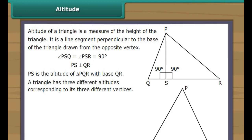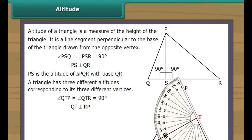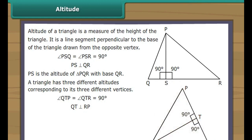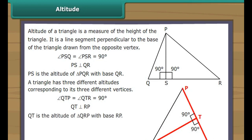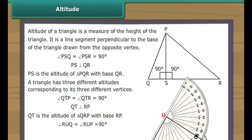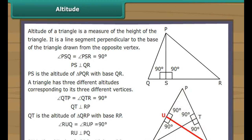Let us now look at the remaining altitudes. We draw a line segment from Q perpendicular to RP at point T. It intersects RP at right angles. Therefore QT is the altitude of triangle QRP with base RP. We draw another line segment from R perpendicular to PQ at point U. It intersects PQ at right angles. Therefore RU is the altitude of triangle RPQ with base PQ.